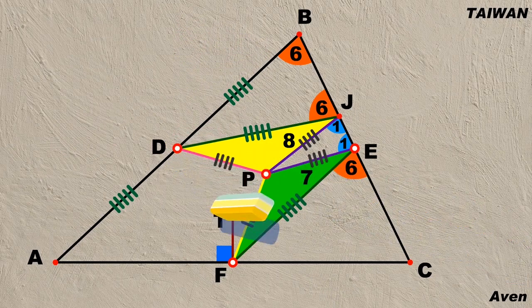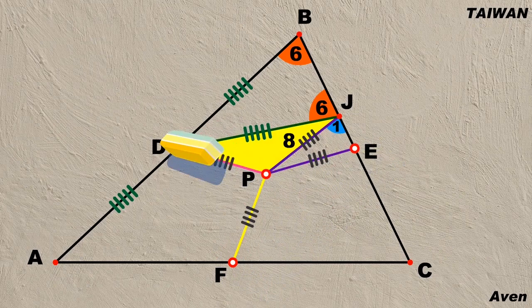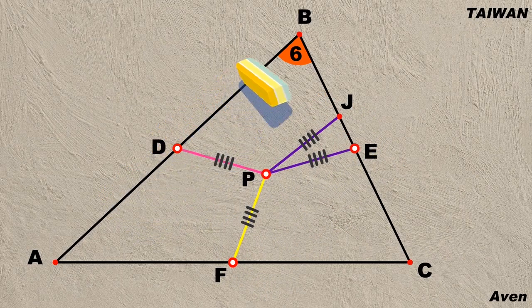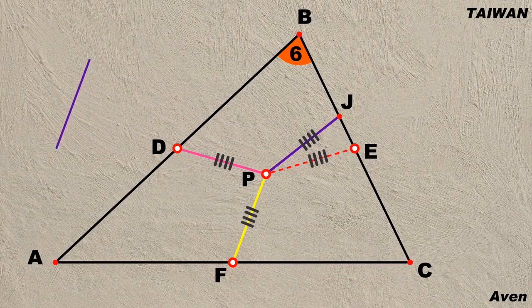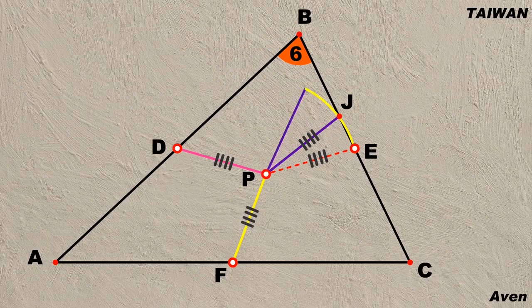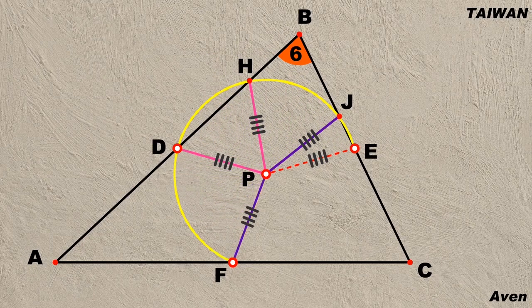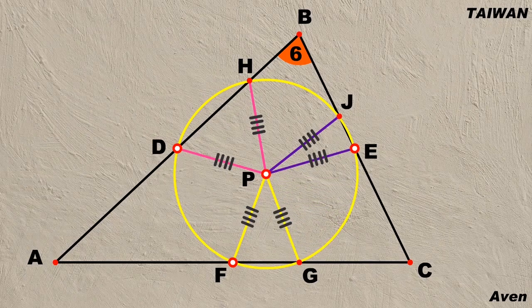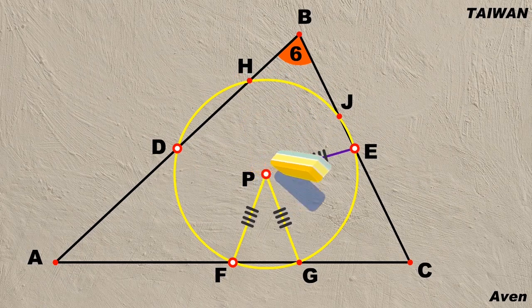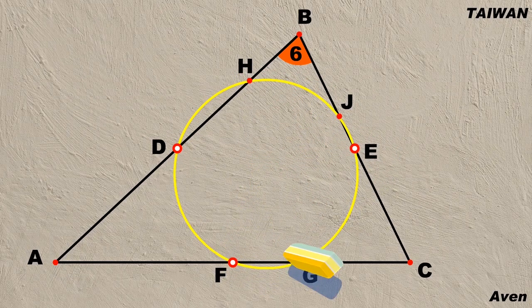Now let's erase unnecessary line segments. We can clearly see four colored line segments on the figure. Since PE is equal to FP, and equal to DP, and also equal to PJ, we can therefore construct a circle to meet triangle ABC at six points. Now let's erase the six radii of the circle. The figure looks clear again.